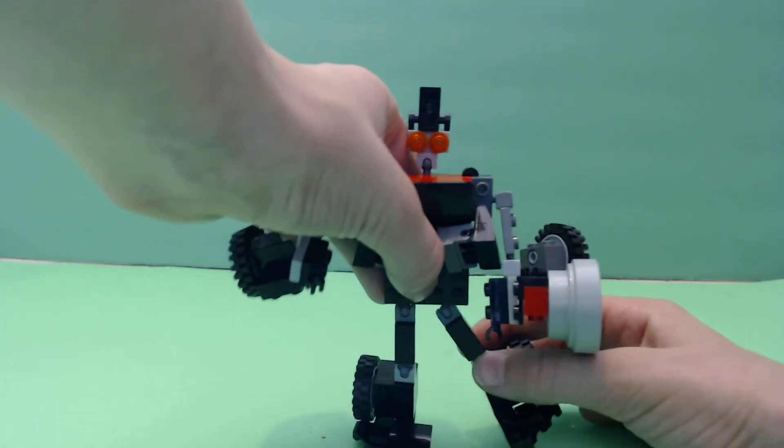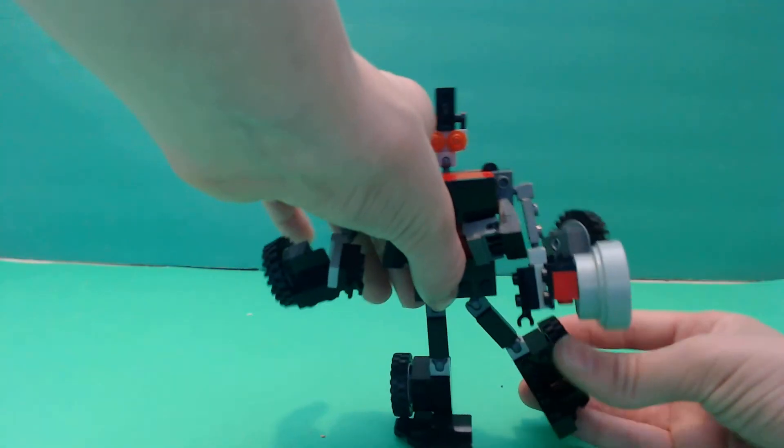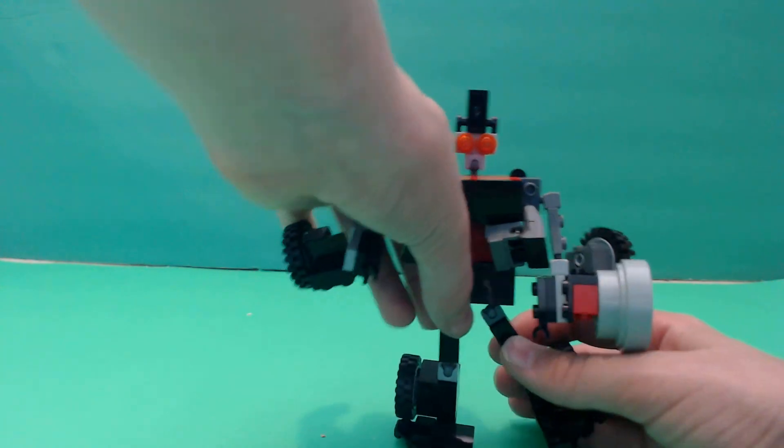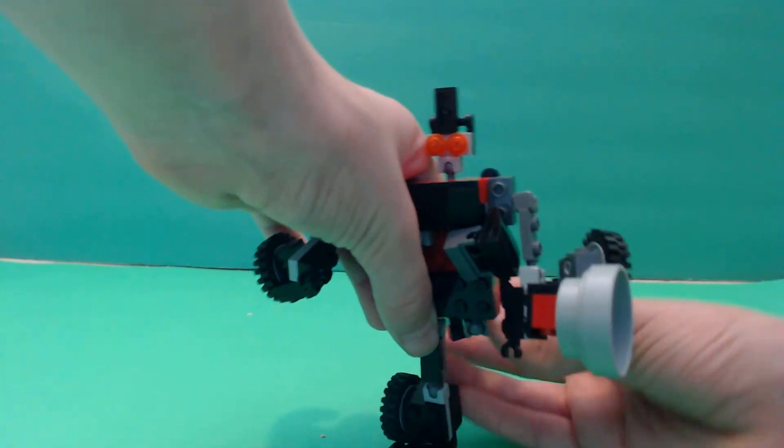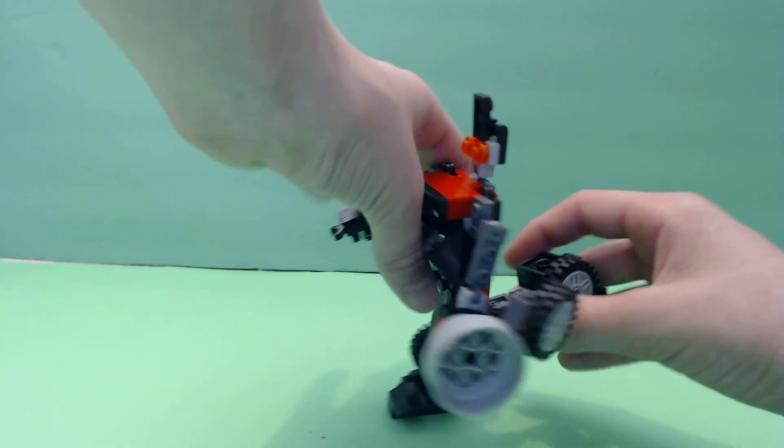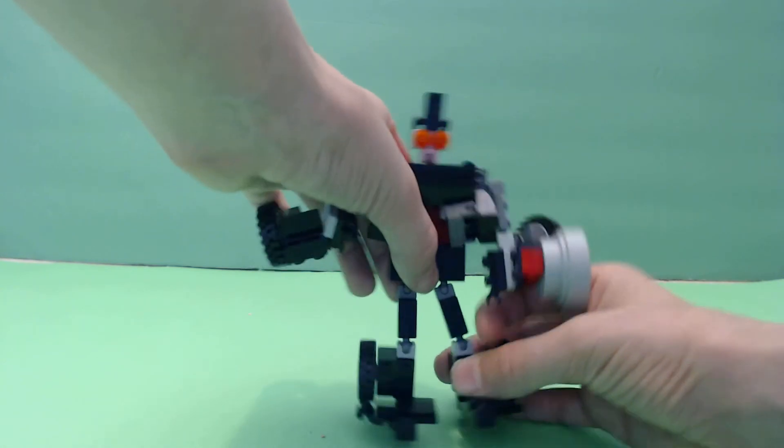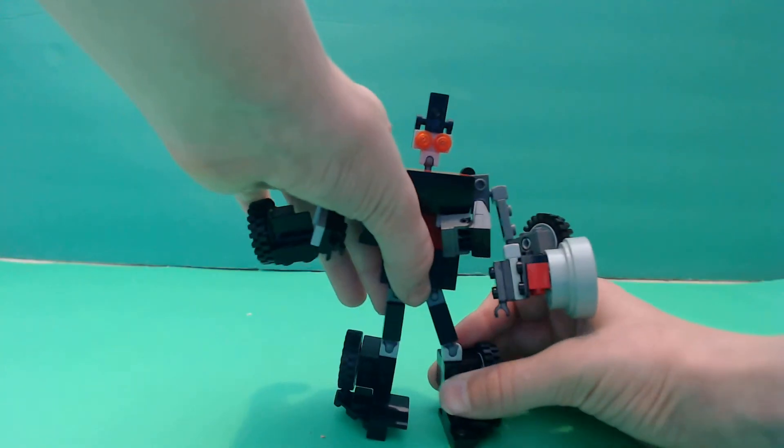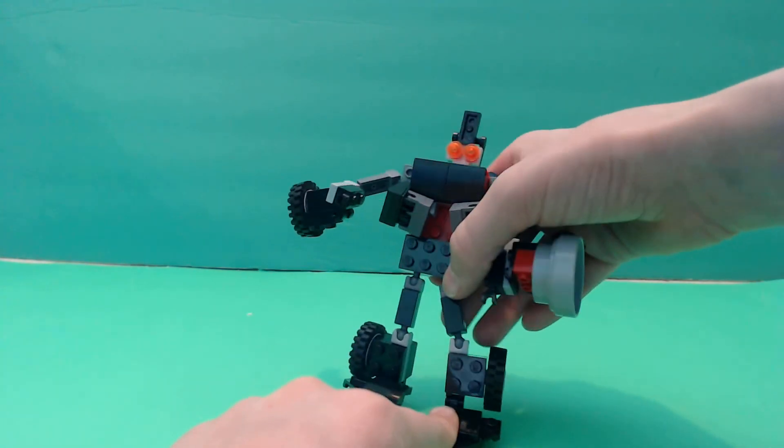And then his leg has about the same, it's on a ball joint. It doesn't go very far out, so you can't really do a side kick. But you can kick back forward and backwards quite a lot. And then he's got a knee joint. And nothing really at the feet.